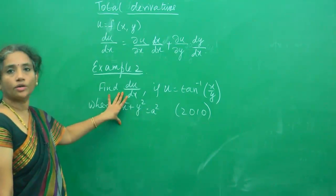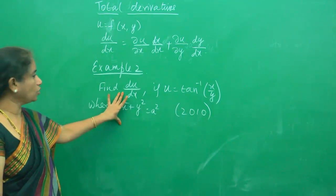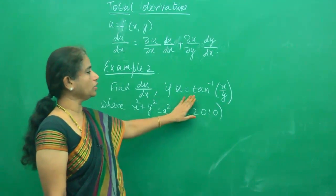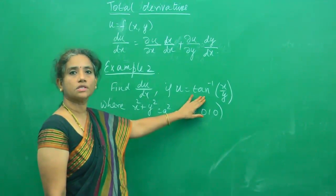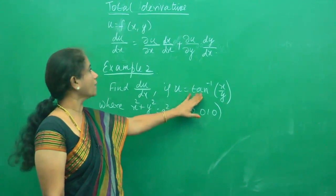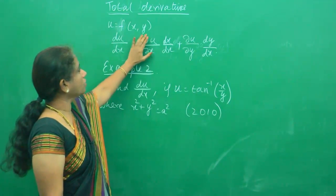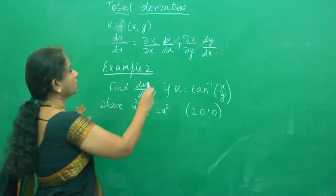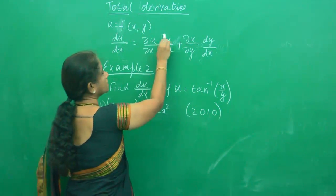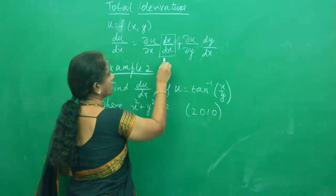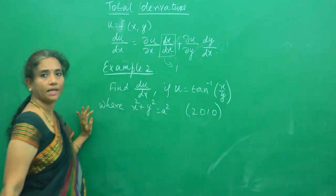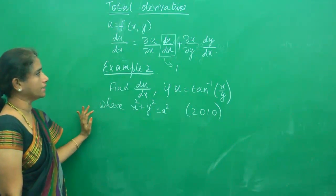We are going to find du by dx, and we are given u is tan inverse of x by y. We are going to use this formula. Please remember this part — the partial derivative with respect to x directly — is actually 1, so we will not be calculating anything there.